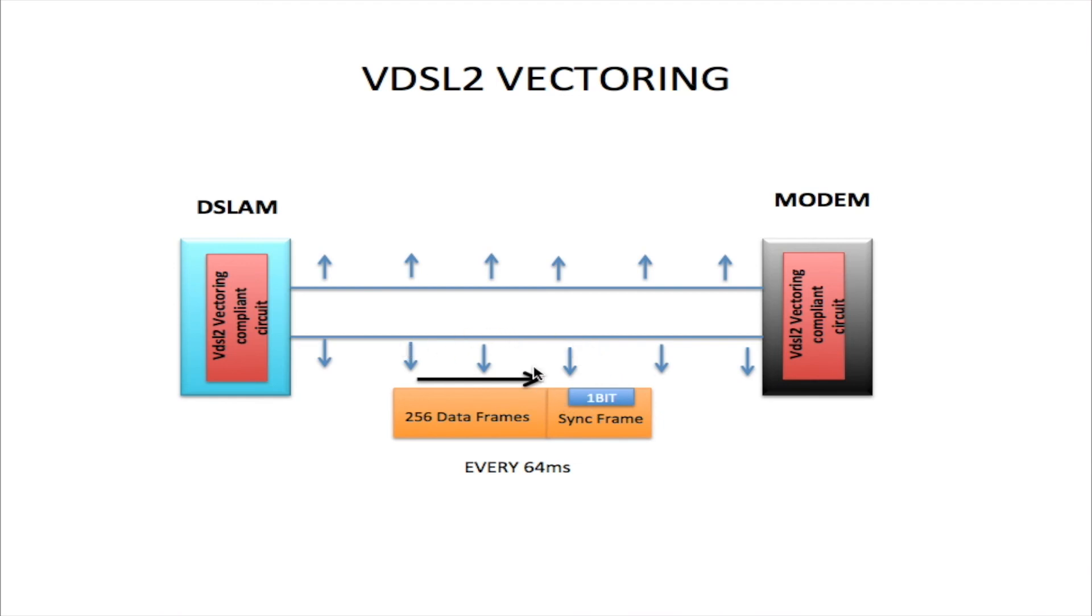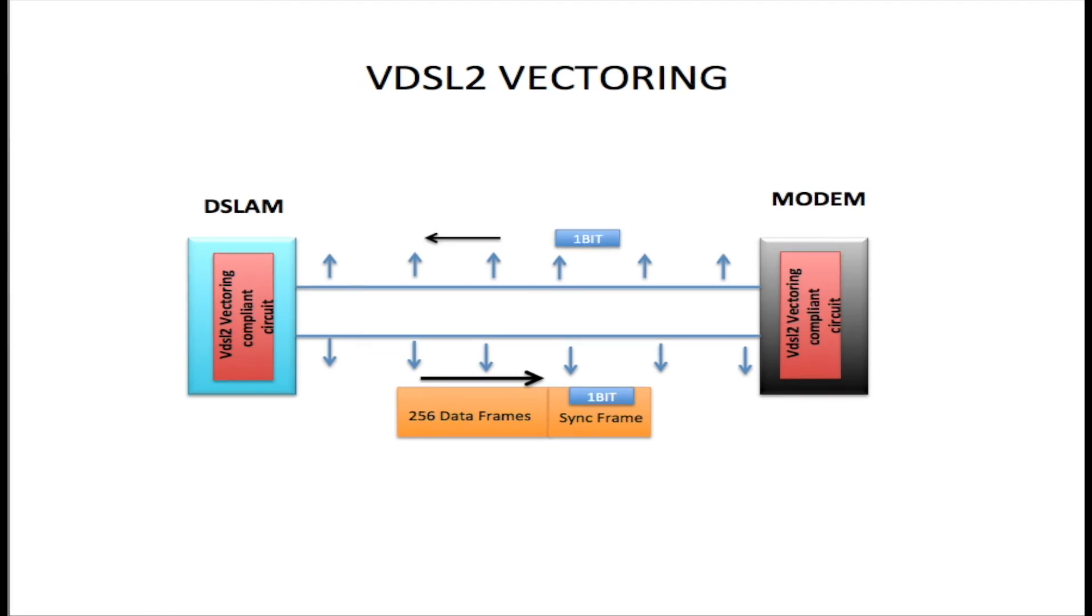So any crosstalk on the line is collected within this one bit here. All of this information is then sent off to the modem. The modem extracts the one bit of crosstalk information from the sync frame and sends it back to the DSLAM. The DSLAM receives the one bit of crosstalk information. It does some in-depth mathematical calculations in order to formulate an injection of anti-noise specifically made for this line from its crosstalk information.